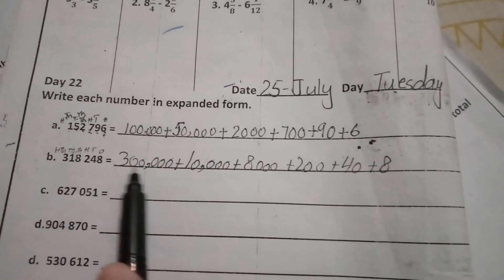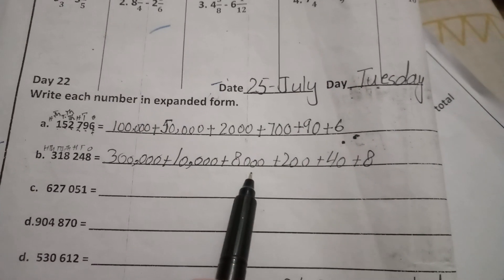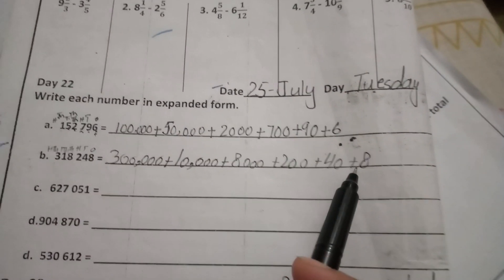Next, the same process. 300,000, then 10,000, 8,000, 200, 40, and 8.